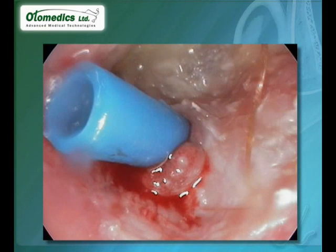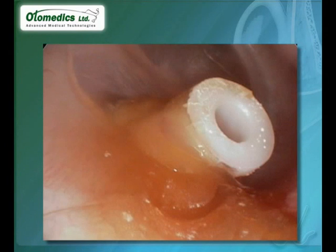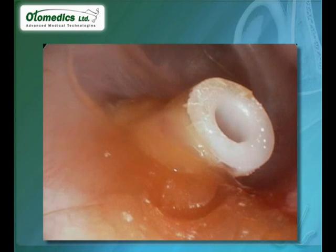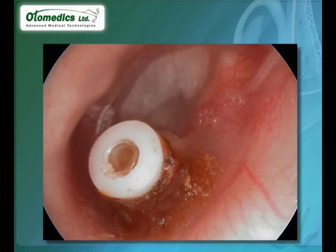Granulation tissue is another outcome of the crusts that accumulate at the base of the tube. In rigid tubes, there is no control over the retention period, and extraction requires general anesthesia. This is one of the disadvantages the surgeon must compromise on when choosing the type of tube. Clogging may be difficult to clean, especially in children.